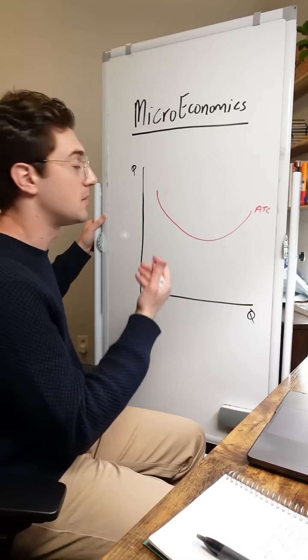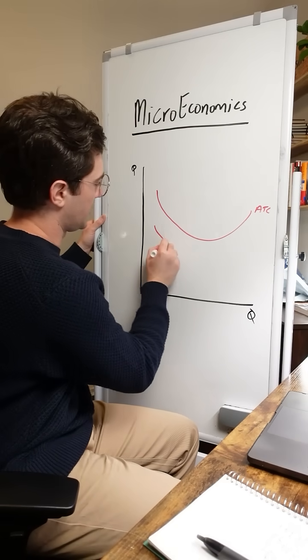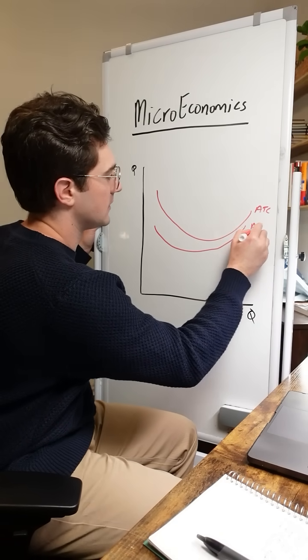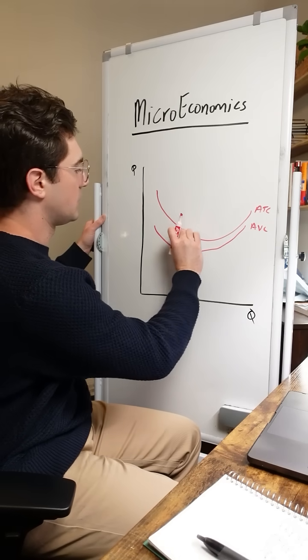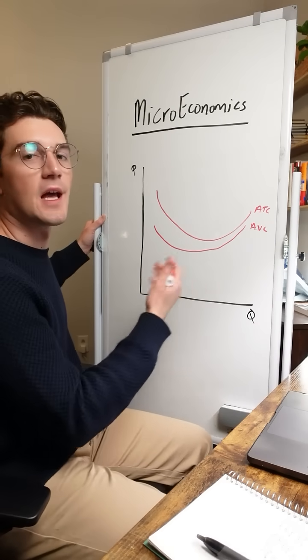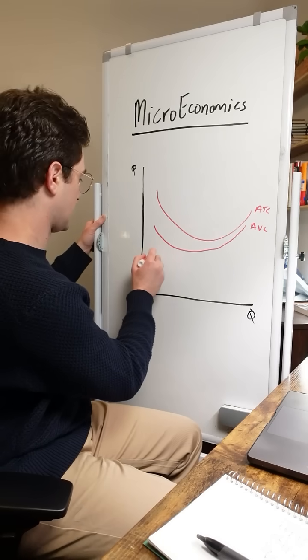The AVC is going to be positioned slightly below it, and it will get closer and closer to the ATC curve. Because the distance between these two curves at every unit is just the average fixed cost, which will look something like this.